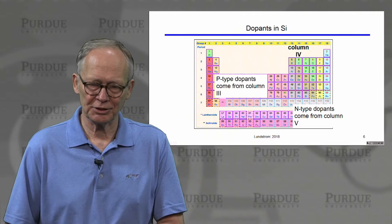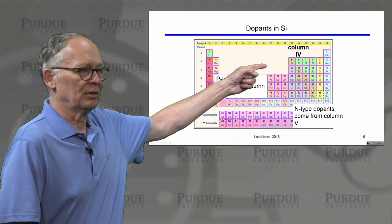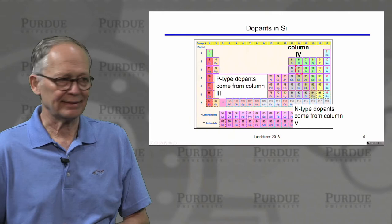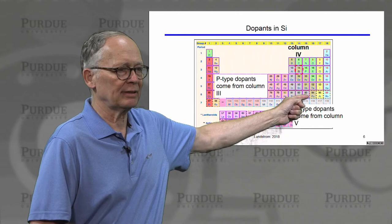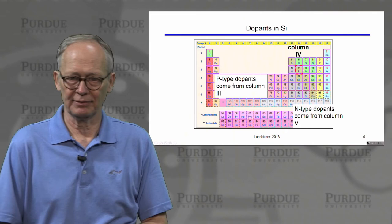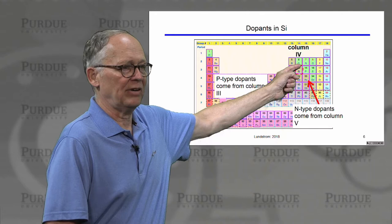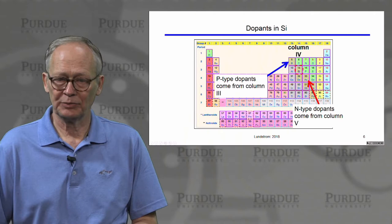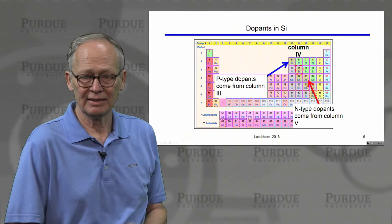To understand how this works, we go back to our periodic table. Let's talk about a common semiconductor like silicon. Silicon has four valence electrons. We'll find that the n-type dopants come from column five — column five has five valence electrons. The p-type dopants come from column three — column three has three valence electrons. So atoms like arsenic and phosphorus from column five are n-type dopants, while atoms like boron, aluminum, and gallium from column three are p-type dopants.